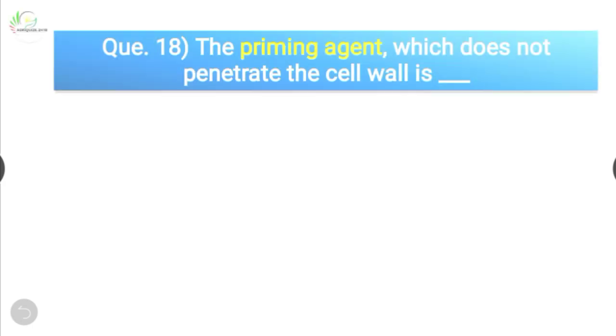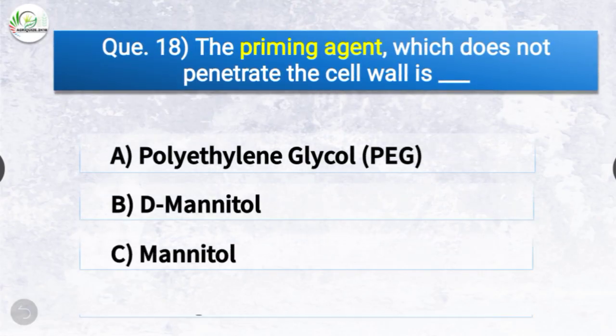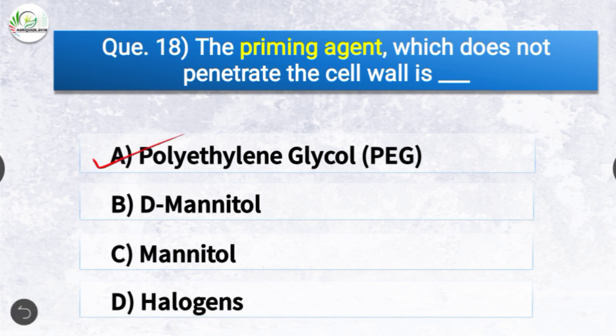Question number eighteen: The priming agent which does not penetrate the cell wall is — the options are polyethylene glycol, de-mannitol, mannitol, or halogens. The correct answer is option A — polyethylene glycol (PEG). The priming agent which does not penetrate the cell wall is polyethylene glycol.